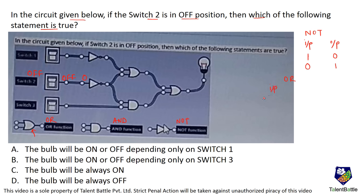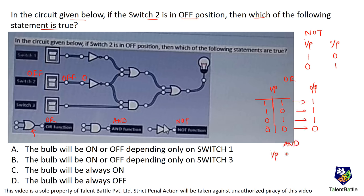For the OR function, there are two inputs and one output. If input is 1 and 1, output is on. If input is 1 and 0, output is on. If input is 0 and 1, output is on. Only if both inputs are off is the output off.